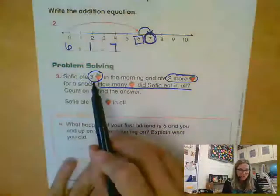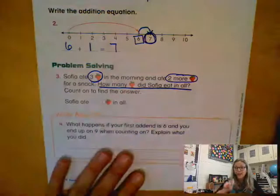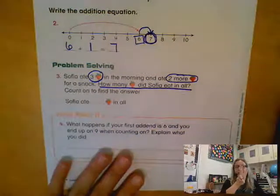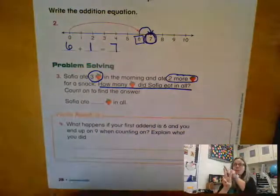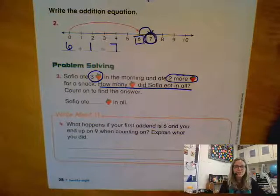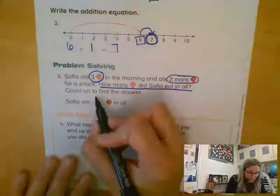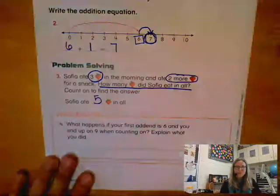So if I start with three, which is my bigger number, and I count on one, two more, then I would say three, four, five. So how many strawberries did she eat in all? Five strawberries.